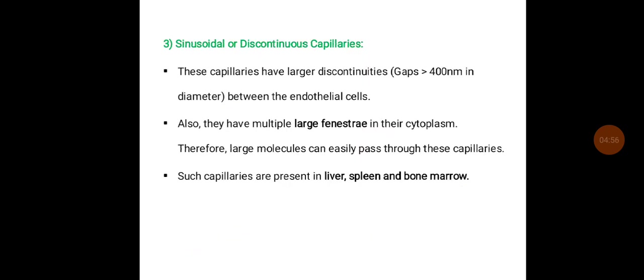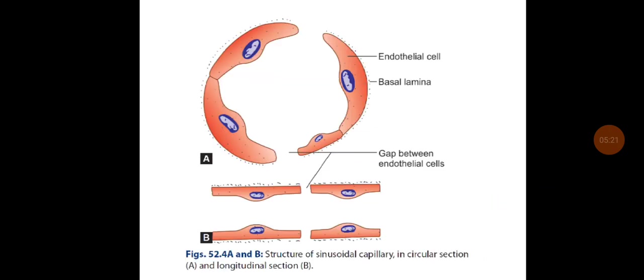Coming to the sinusoidal or discontinuous capillaries, these capillaries have larger discontinuities with gaps measuring more than 400 nanometers. They also have multiple large fenestrations in their cytoplasm. Therefore, large molecules can be easily passed through these capillaries. Such capillaries are present in the liver, spleen, and bone marrow.